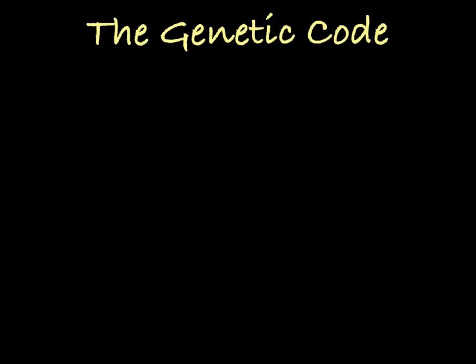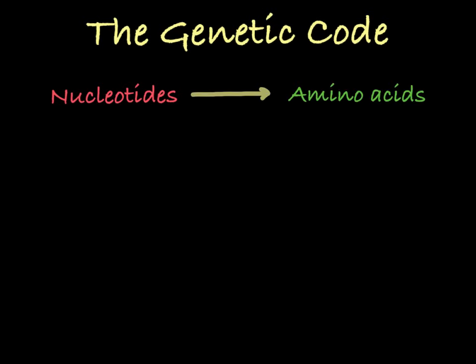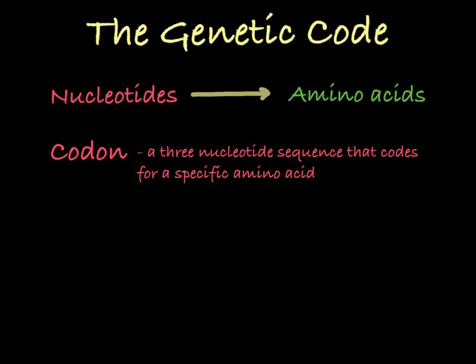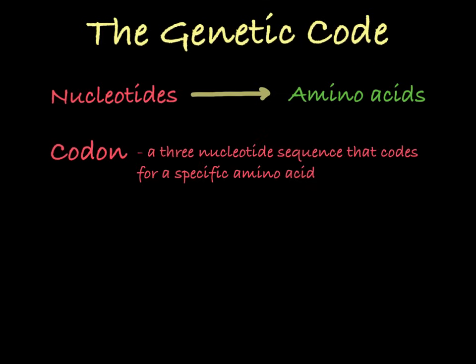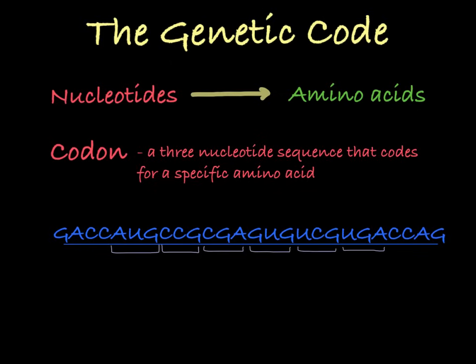So how do we go from instructions that are a sequence of nucleotides into a chain of amino acids that will eventually fold into a protein? The answer is in the codon. We interpret mRNA in a series of three nucleotides at a time, called a codon. A single codon will correspond to a specific amino acid. So we move along an mRNA strand reading groups of three nucleotides at a time, each corresponding to a specific amino acid.